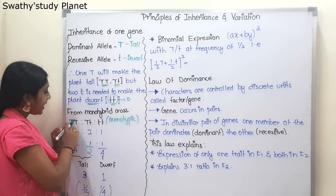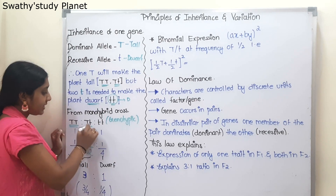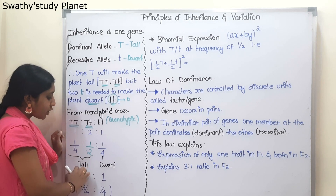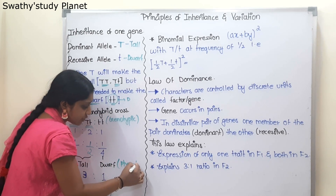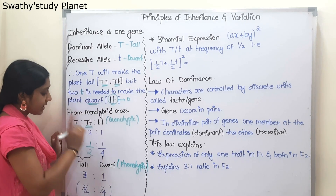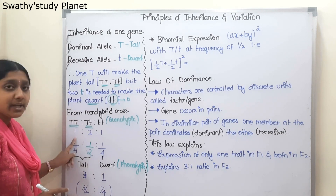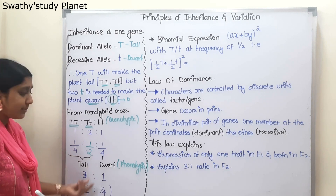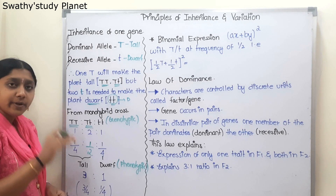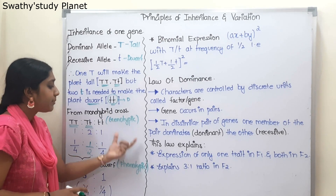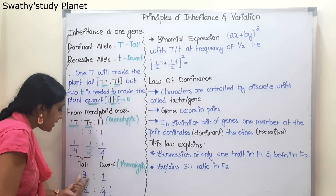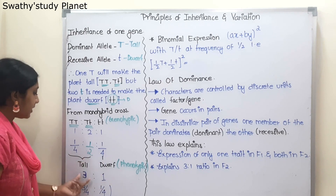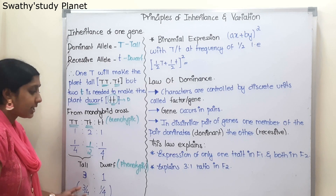Capital T and capital T is tall; capital T and small t is also tall. Small t and small t is dwarf. For the phenotypic ratio, we add all the tall genotypes: 2 plus 1 is 3 tall, and 1 dwarf. In fraction form: 3/4 tall and 1/4 dwarf. So the phenotypic ratio is 3:1.